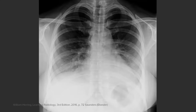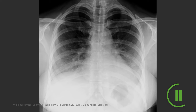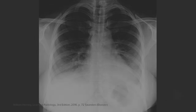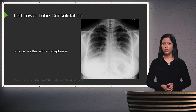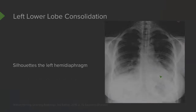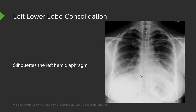This is an example of left lower lobe consolidation. We have silhouetting of the left hemidiaphragm — you can see a sharp margin on the right, but the left hemidiaphragm, which is normally visualized through the heart, is no longer seen. This confirms a left lower lobe consolidation.